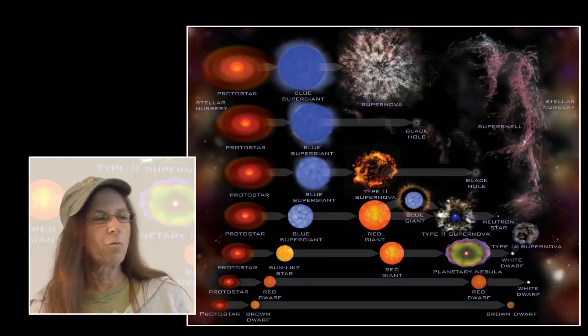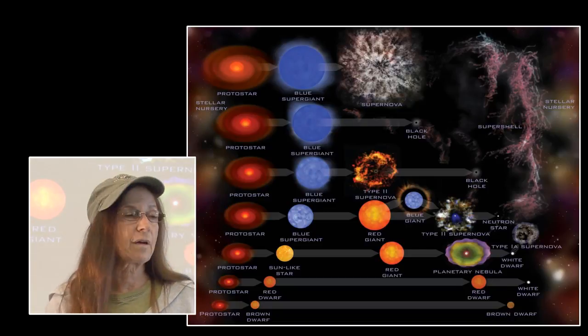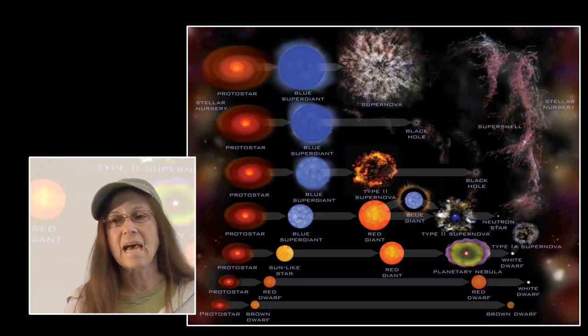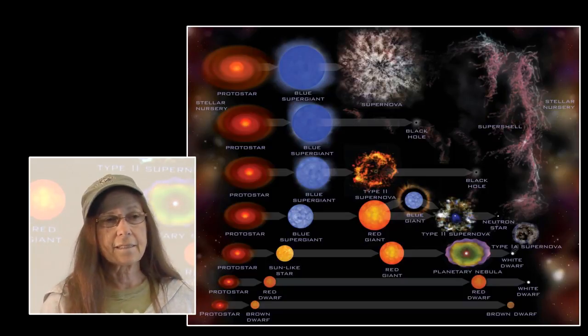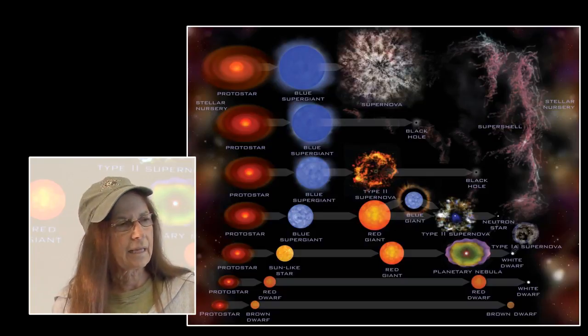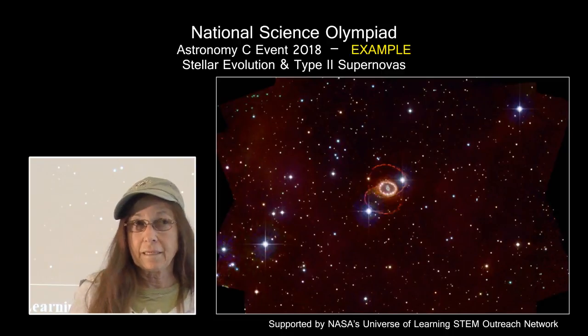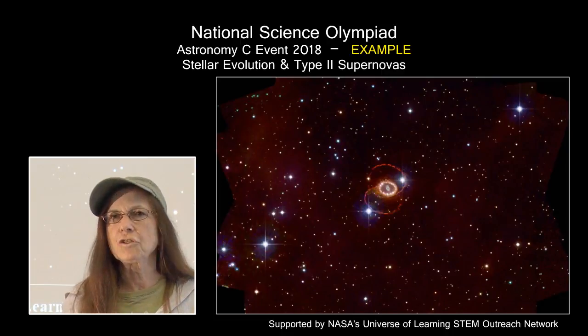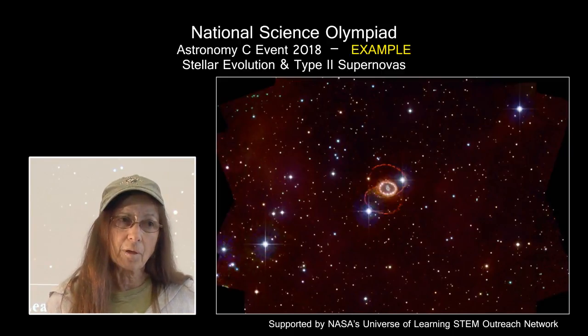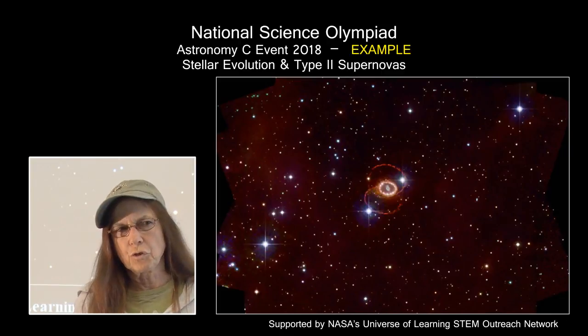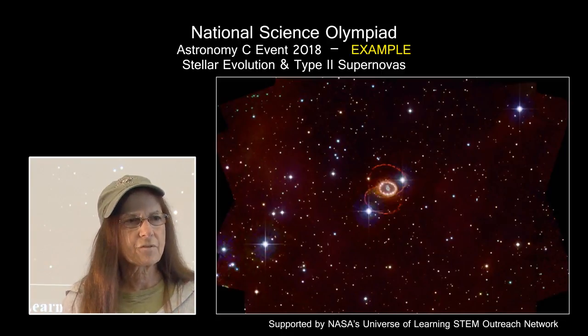This is the graphic that we have been using forever to show the different cycles of stellar evolution based upon the initial mass of the star. Every single year, astronomy is stellar evolution and something. This year, 2018, I am using the 2018 astronomy event Deep Sky Objects just as an example of how you use these objects to teach your teams the process of stellar evolution.